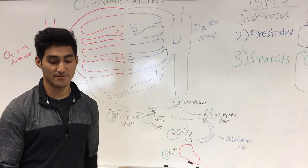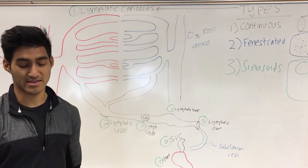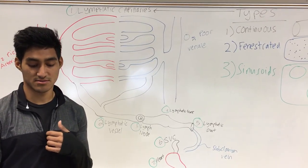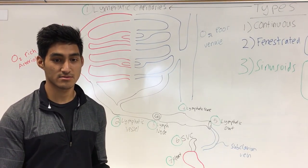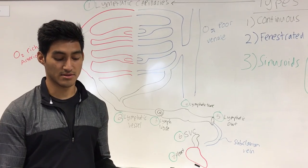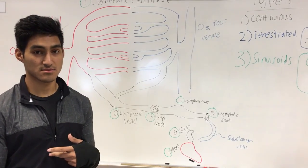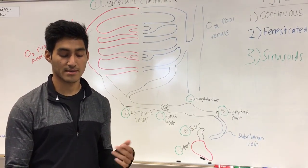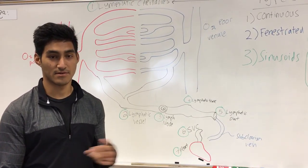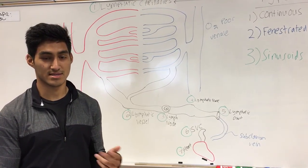The third function relates to fat absorption. Blood vessels are too small to pick up large fat molecules, so the lymphatic vessels, which are called lacteals, pick up fat from the small intestines.